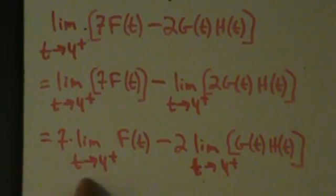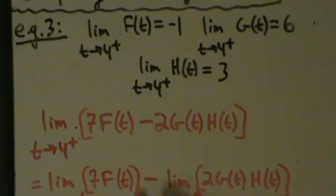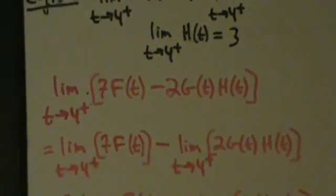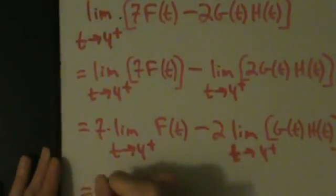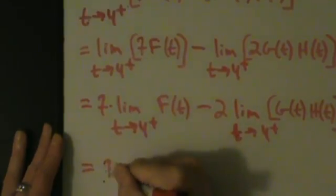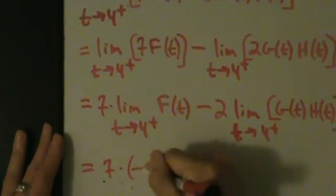So now what? Well now this is pretty much broken down, this first term here is broken down as much as it can be. So limit as t approaches 4 from the right of F of t, remember we were told that that's negative 1. So let's go ahead and take that value now, and we're going to write this as 7 times negative 1.